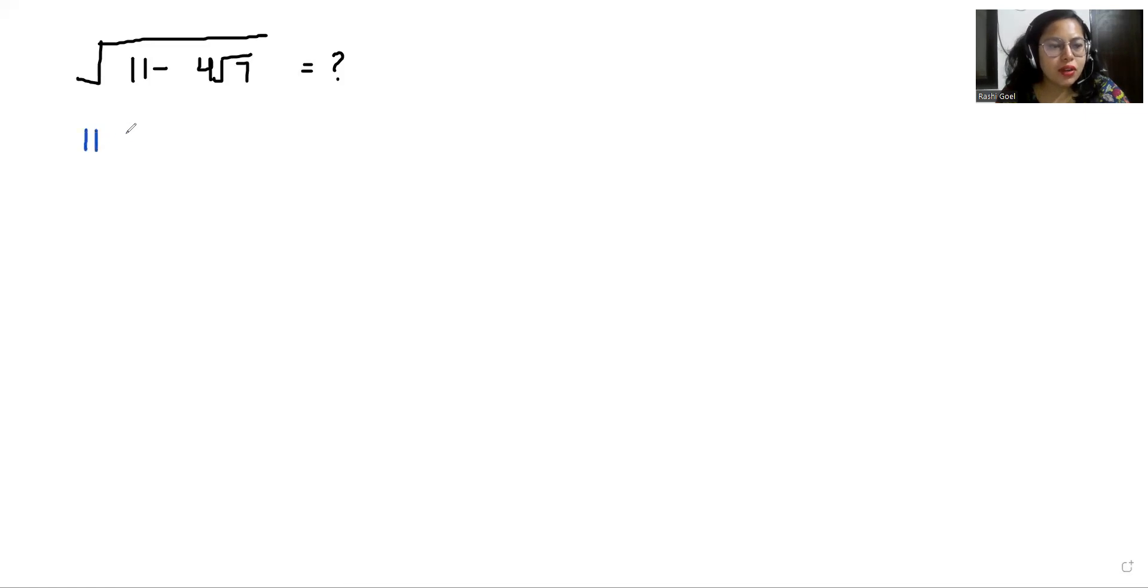So first, 11 I can write it as 4 + 7. Similarly, 4√7 I can write it as 2 × 2 × √7.